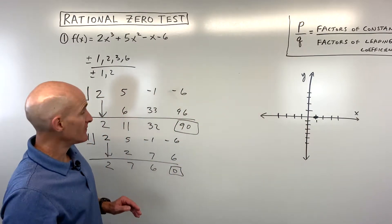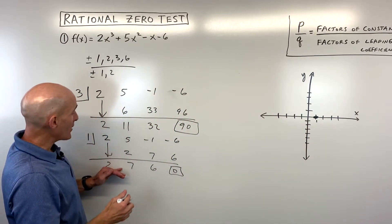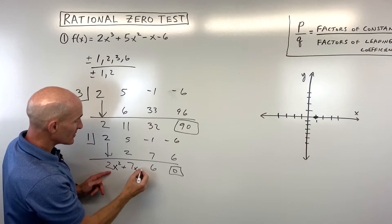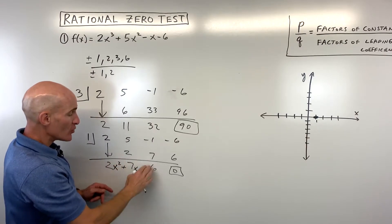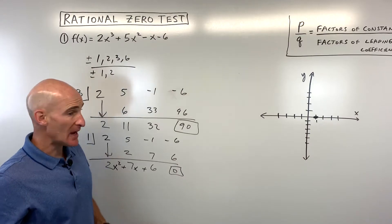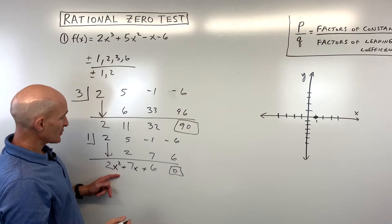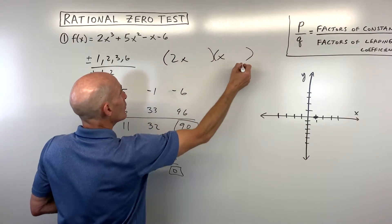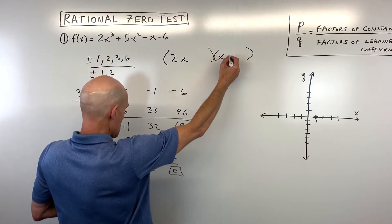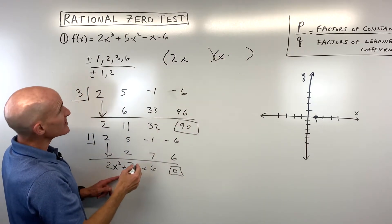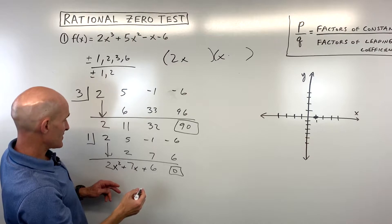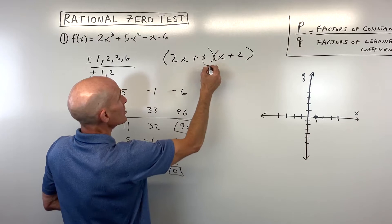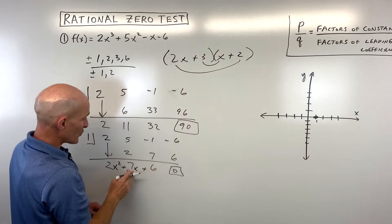Once you do the synthetic division and you get it down to a quadratic — we started with x cubed, it goes down by one degree each time — so this would be 2x squared plus 7x plus 6. You can factor it or use the quadratic formula to find the remaining zeros. It looks like we can factor this: 2x and 1x. We need factors that give us a middle term of 7x, so it's going to be 2 and 3 — giving us 3x and 4x, which adds up to 7x.